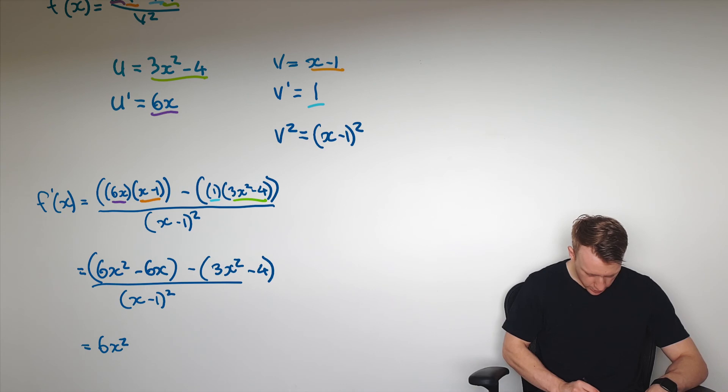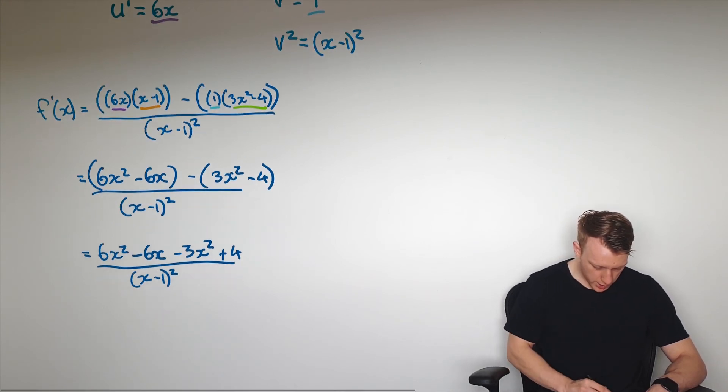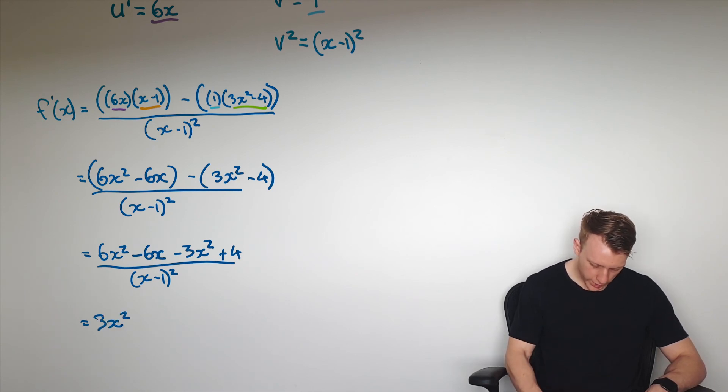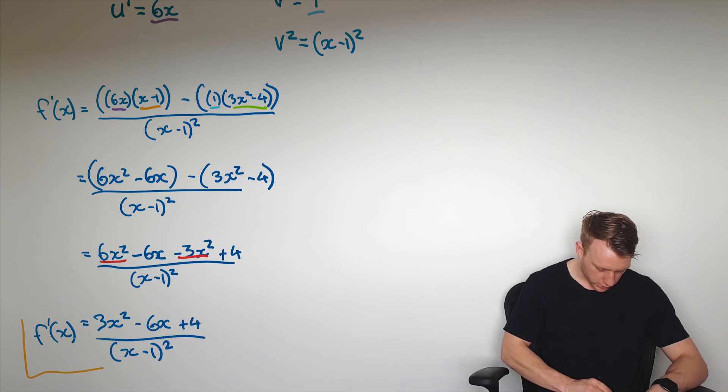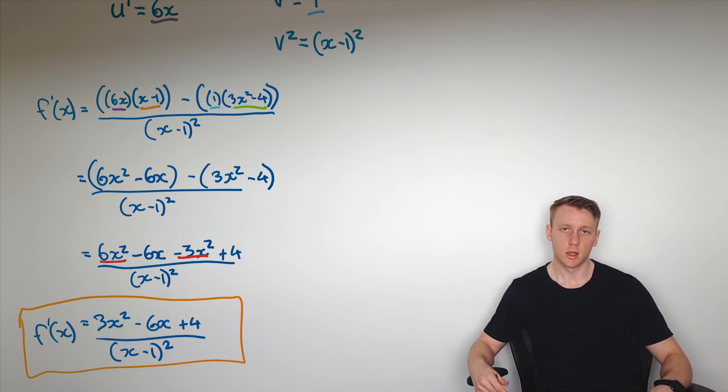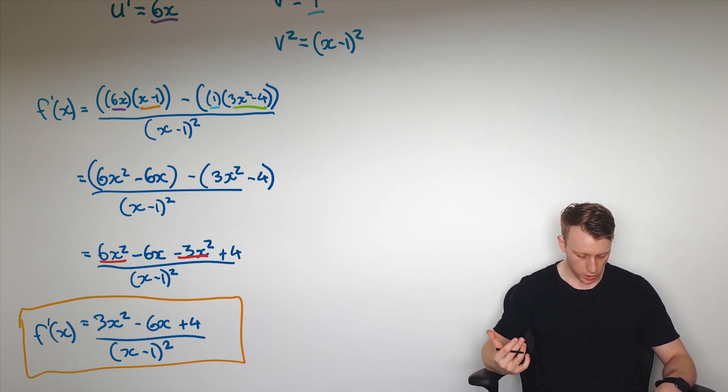So I'd have 6x² - 6x - 3x² + 4 over (x - 1)². And we would clean that up and say we've got 3x² (where that guy and that guy, they're like terms we're bringing together), minus 6x plus 4 over (x - 1)². And here is my derivative by using the quotient rule.